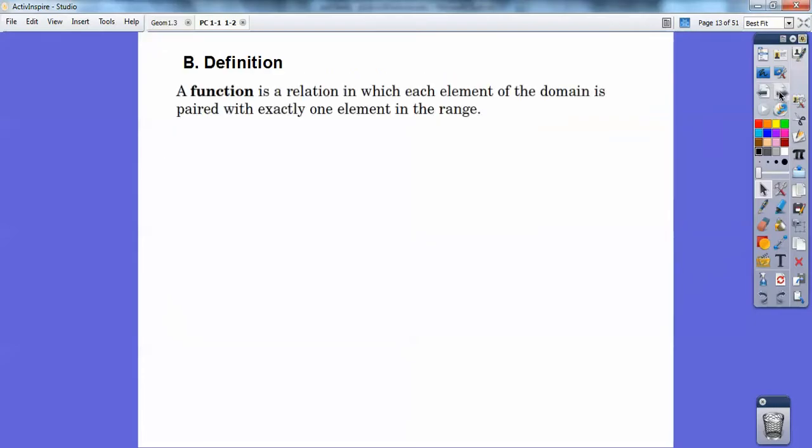All right, so definition. A function is a relation where each element of the domain is paired with exactly one element of the range. And the trick is, you just can't have an x repeating going to two different y's. You can have y's repeating, you just can't have your x's repeating. That's the trick.